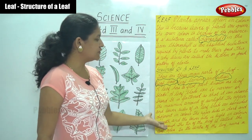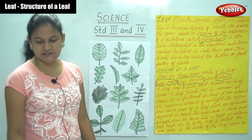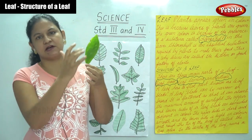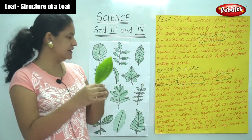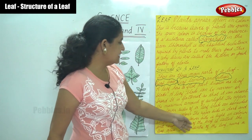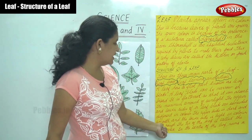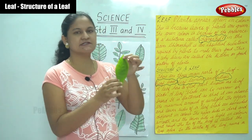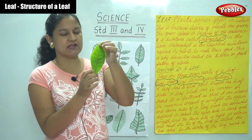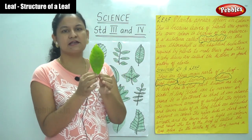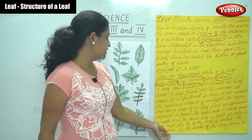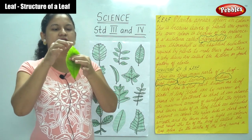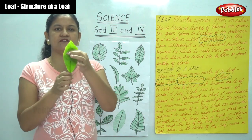The upper and lower sides of a leaf blade are somewhat different in color. The upper side is dark and smooth, while the lower side is light in color and rough. The tip of the leaf is called the leaf apex.